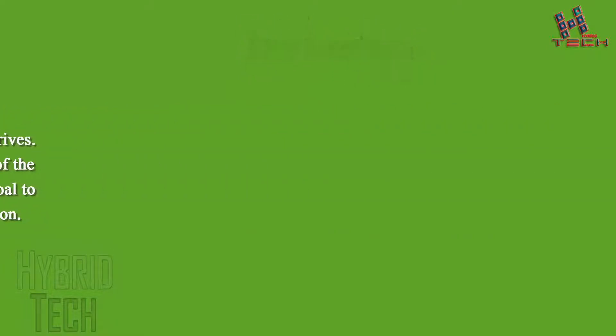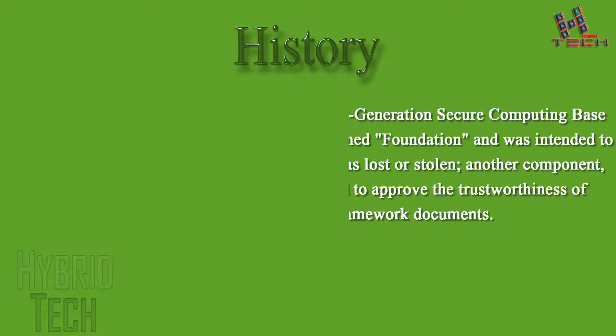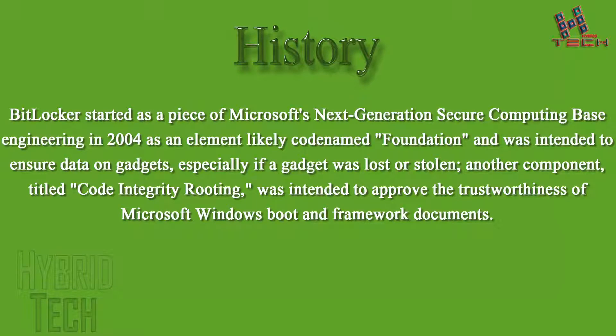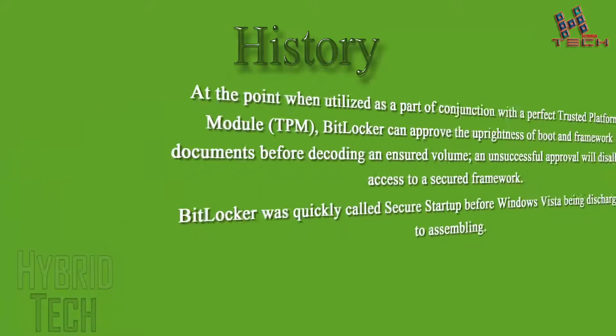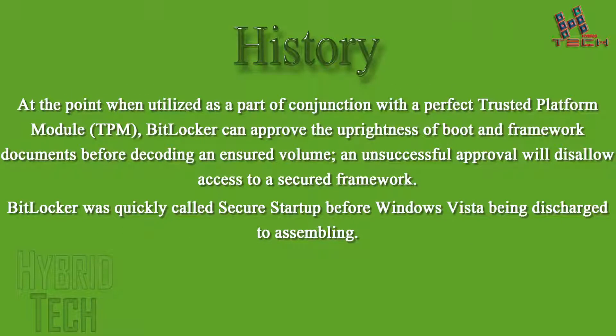BitLocker started as part of Microsoft's Next-Generation Secure Computing Base architecture in 2004, codenamed "Foundation," and was designed to protect data on devices, especially if a device was lost or stolen. Another feature titled "Code Integrity Rooting" was designed to validate the integrity of Microsoft Windows boot and system files. When used in conjunction with a compatible Trusted Platform Module (TPM), BitLocker can validate the integrity of boot and system files before decrypting a protected volume.